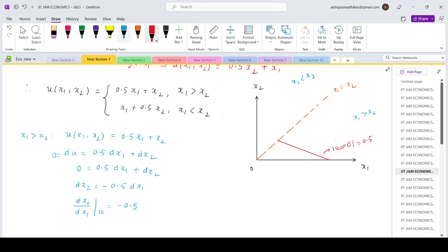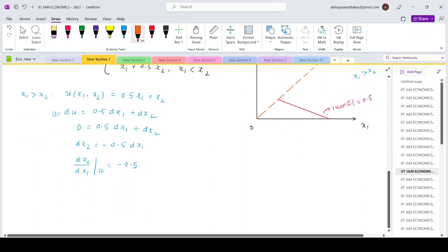If we take a look at the upper part for x₂ greater than x₁ or x₁ less than x₂, in that case the utility function is something like x₁ plus 0.5x₂. If we do a very similar calculation, the intercepts will thus get swapped.